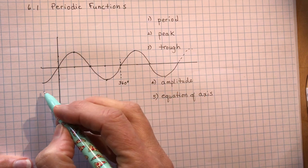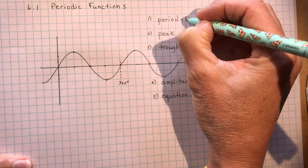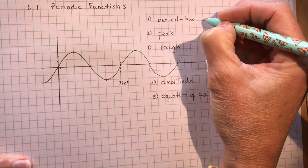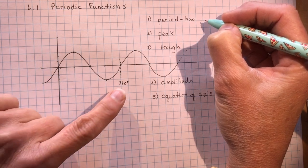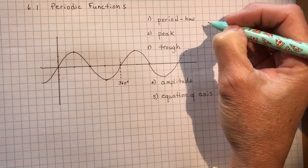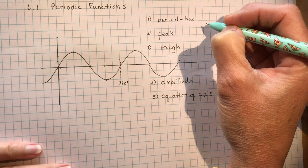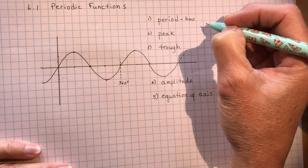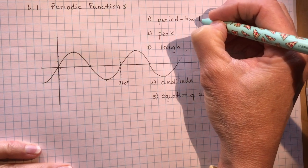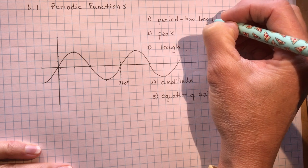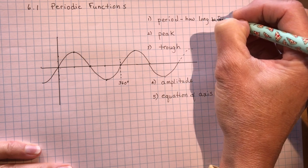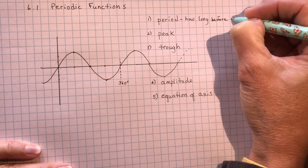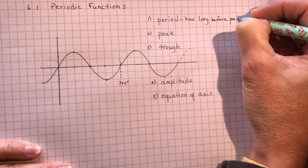So the period means how long before the pattern repeats. So with the sine function, it would be 360 degrees. But for a saw blade, it might be a few seconds. So how long before pattern repeats.